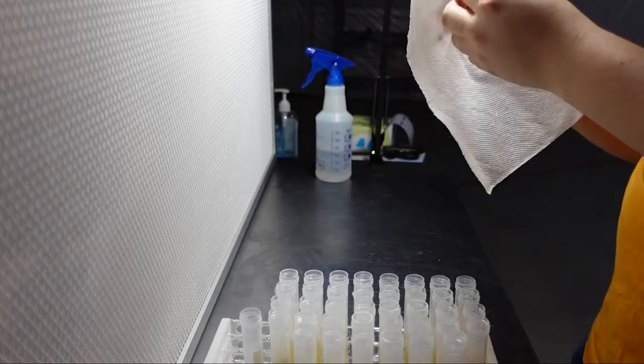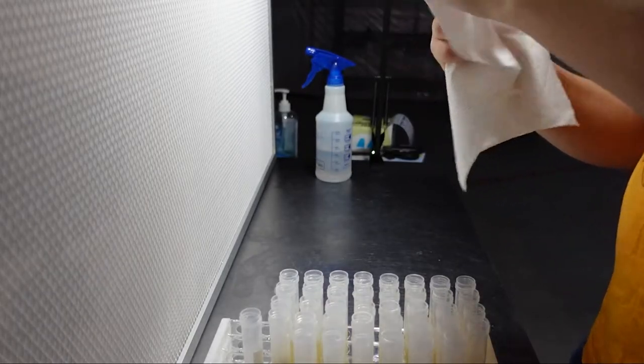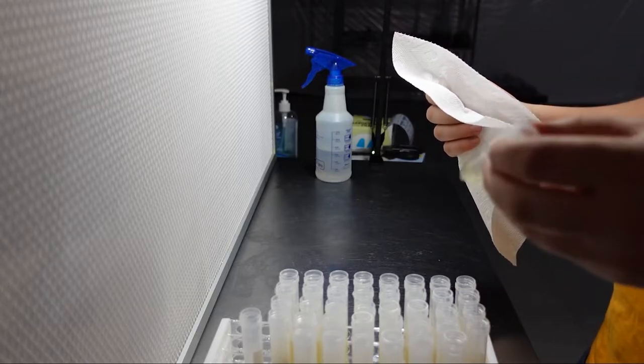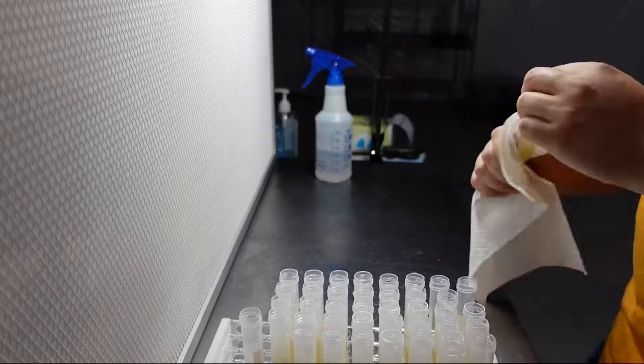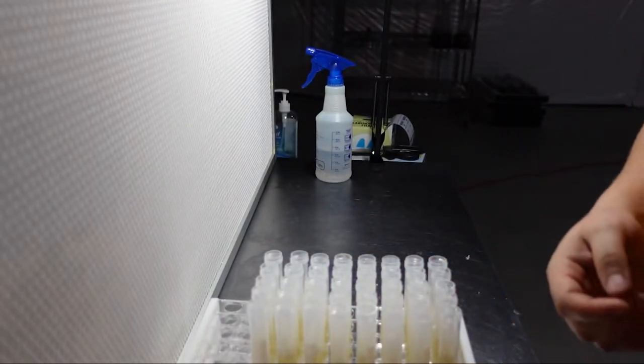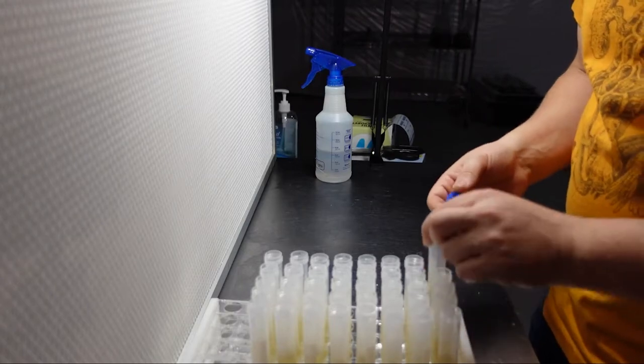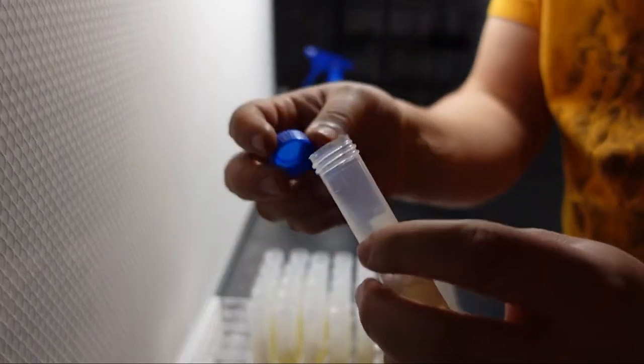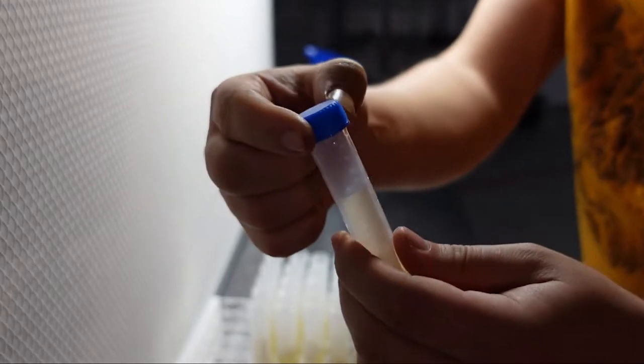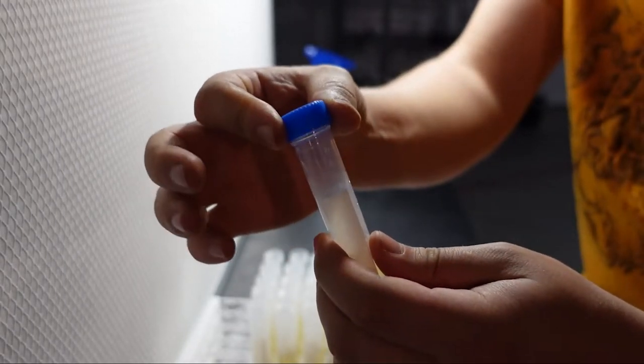Once all the tubes are filled, I like to go through and wipe down the sides and tops with a paper towel, in case I spilled some media on the sides. Now that the tubes are wiped off, I'll go through and loosely screw on the lid to each tube. You'll want to make sure that you don't tighten the lid all the way down, as this could cause the tube to break during the sterilization process.